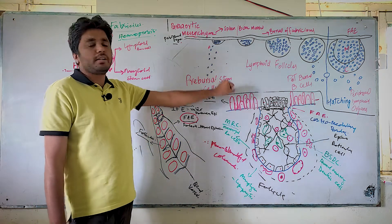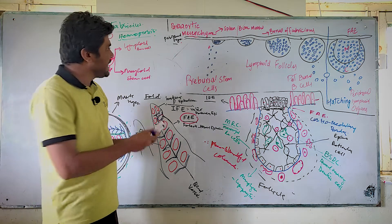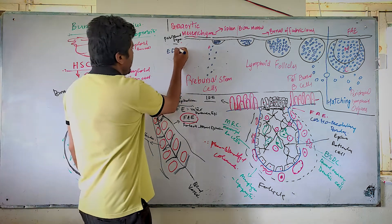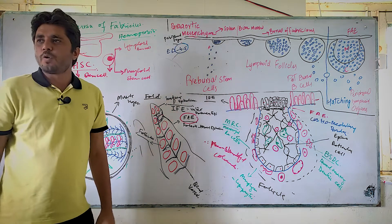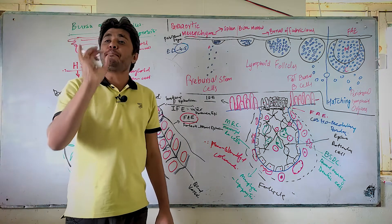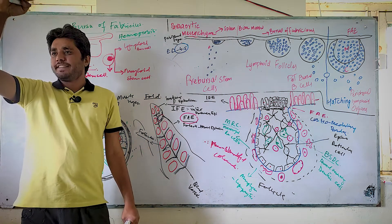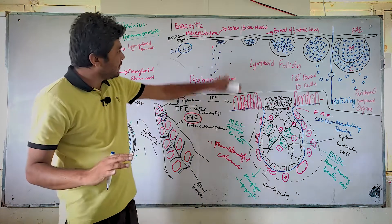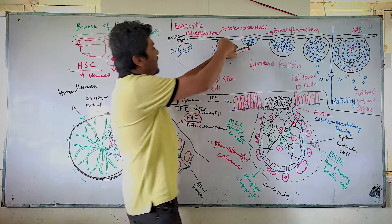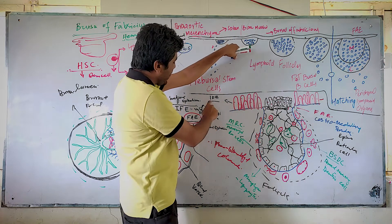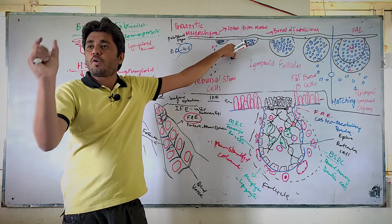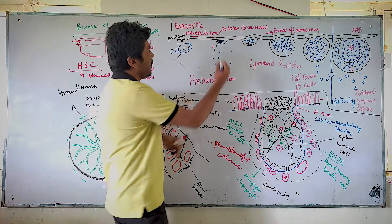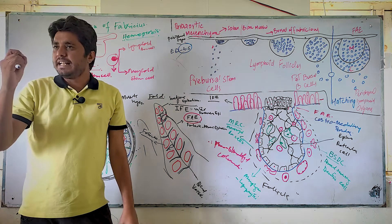If you look in the embryo of a bird on embryonic day 4 to 5, you will find a bud of epithelial cells on the cloaca. This epithelium is called follicular-associated epithelium or FAE. People believe this epithelium and the cloaca epithelium have the same origin — they come from ectoderm. On that surface we have this bud, known as the epithelial bud.